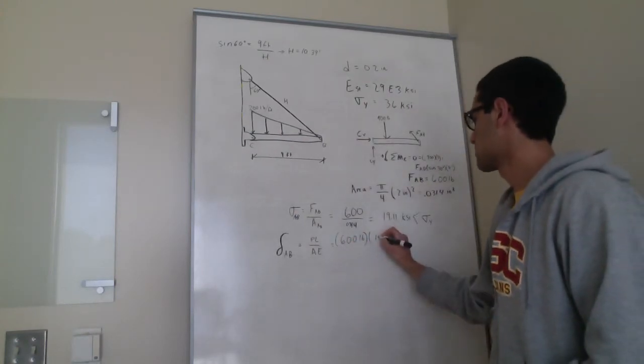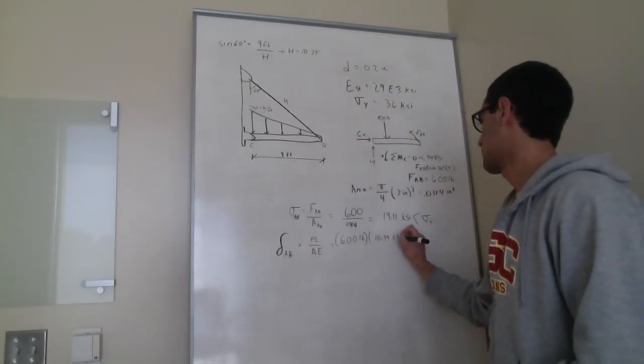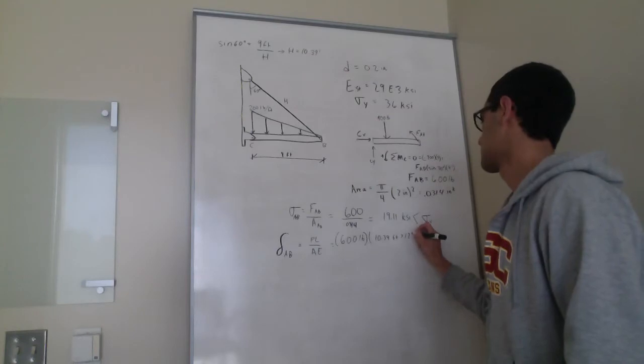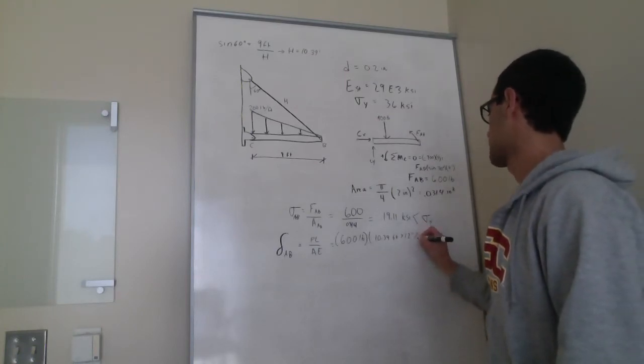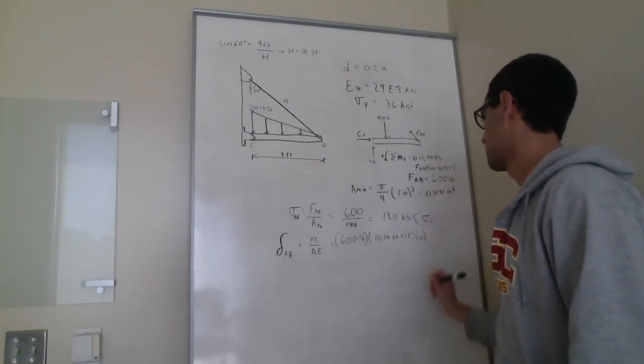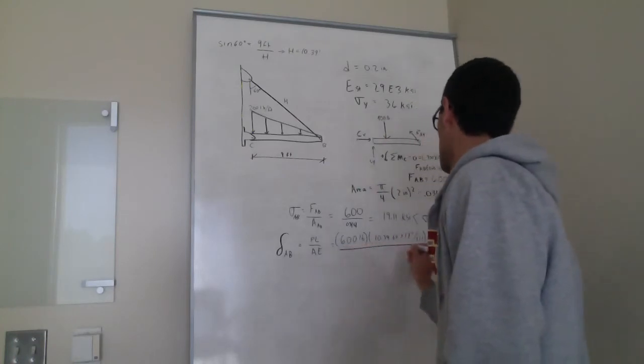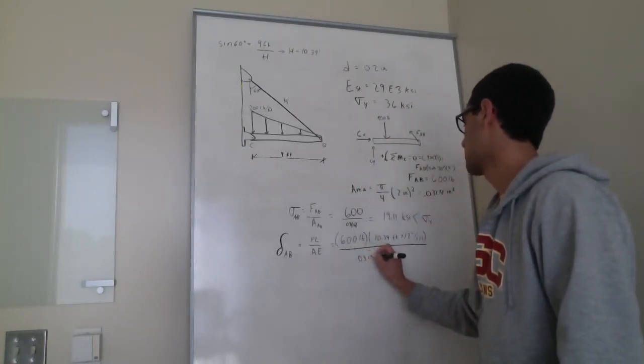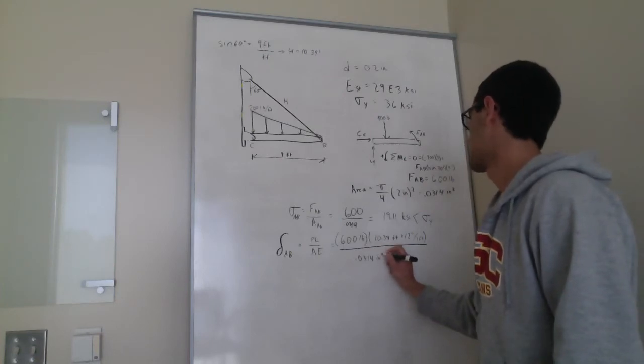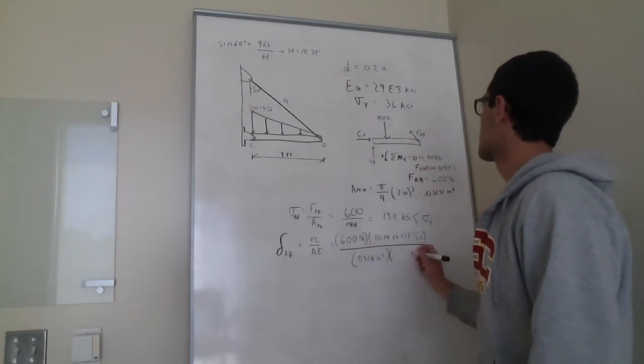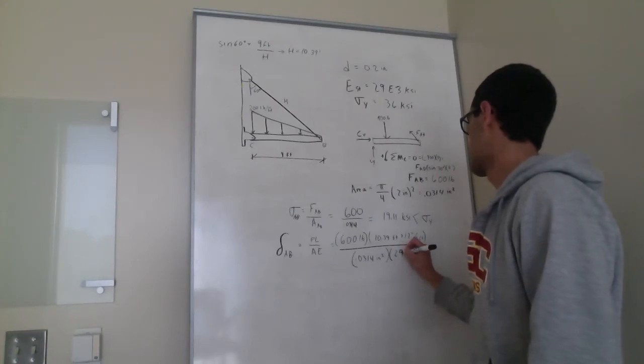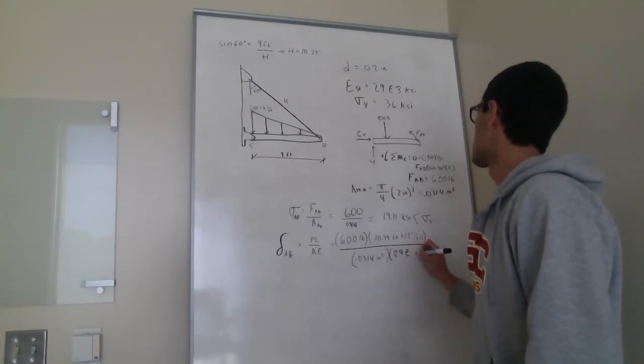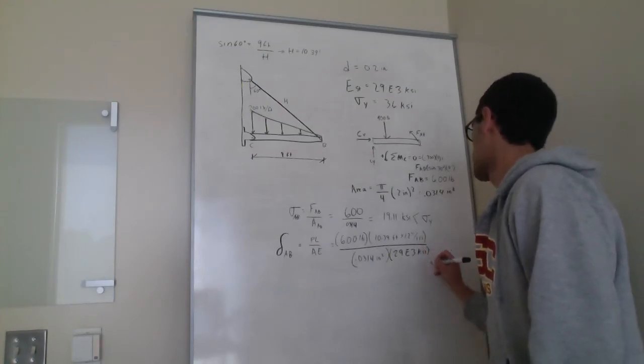So PL, 10.39 feet multiplied by 12 inches per foot. The area we set is 0.0314 inches squared. E is 29 times 10 to the power of 3 KSI.